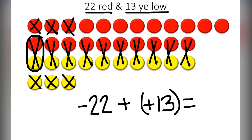That will leave us with 9 red. The signs here are different. Negative 22 positive 13. So we subtract 22 and 13 or find the distance and it is 9. And the larger number was red. So therefore it became negative 9.